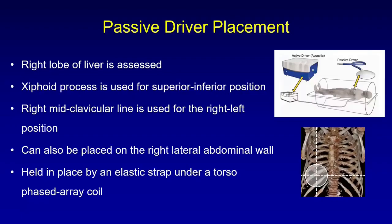The passive driver — that oval-shaped structure — is placed on the patient's abdomen over the right lobe of the liver. To ensure correct placement, we use anatomical landmarks: the xiphoid process for superior-inferior positioning and the mid-clavicular line for right-left positioning. In patients who have undergone surgery, it may be placed on the right lateral abdominal wall. The passive driver is held in place by an elastic strap under a torso phased array coil.